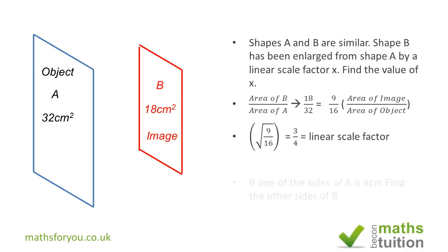And then it goes on to say, if one of the sides of A is 4 centimeters, find the other sides of B. Now what you do, because you've got this linear scale factor of 3 over 4, if one dimension of A is 4 centimeters...